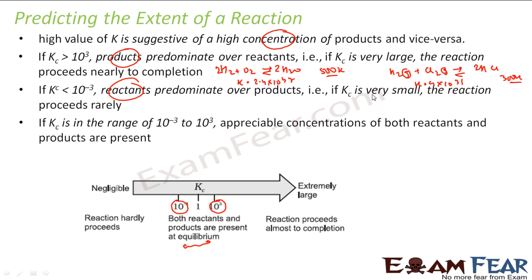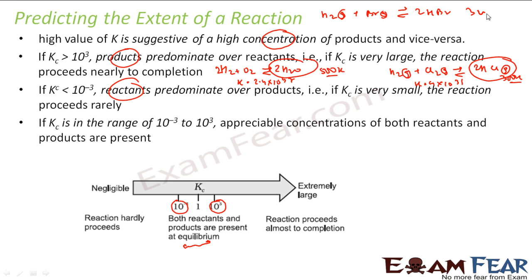These are very high K values, implying that most of the hydrogen and chlorine gas has combined to form HCl gas — the reaction is mostly on the product side. Another example: H₂(g) + Br₂(g) ⇌ 2HBr at 300 Kelvin, where K is 5.4×10¹⁸ — a very high K, meaning the reaction again strongly favors products and most of the hydrogen and bromine gas has reacted to form HBr.